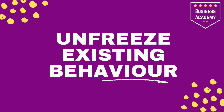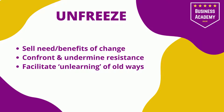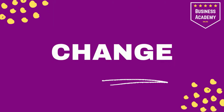The first stage is to unfreeze existing behavior. A manager has to sell the needs and benefits of change — why it needs to happen and how it's going to benefit the organization and the individuals. There's going to be resistance to that, as people do fear change. So it's about confronting and undermining the resistance, making the logical case as to why this has to happen, and facilitating the unlearning of old ways by creating new structures, new processes, and so on.